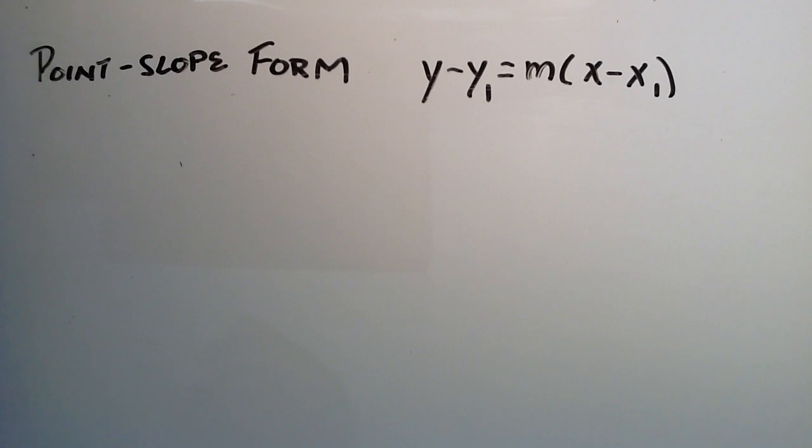Hello, everybody. This is Paul. Today I'm going to be discussing the point-slope form of a line. The point-slope form is useful when we are given a point and a slope of a line, and we're trying to determine what line has that point and that slope.